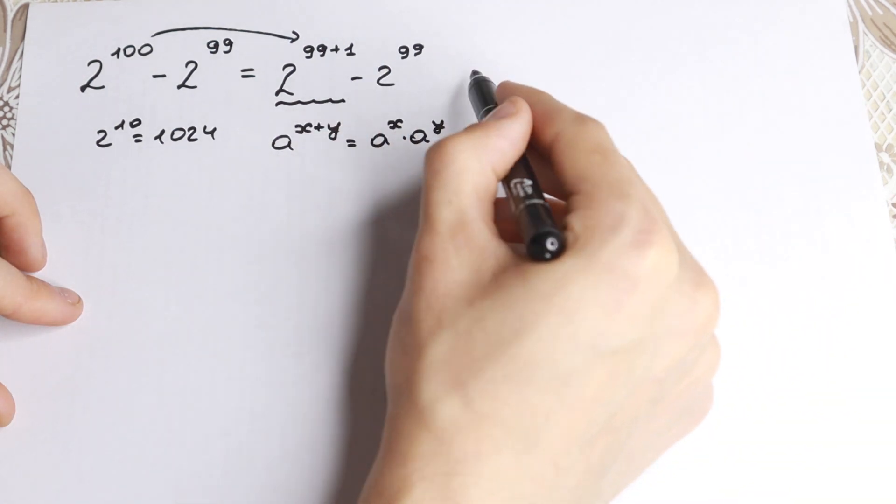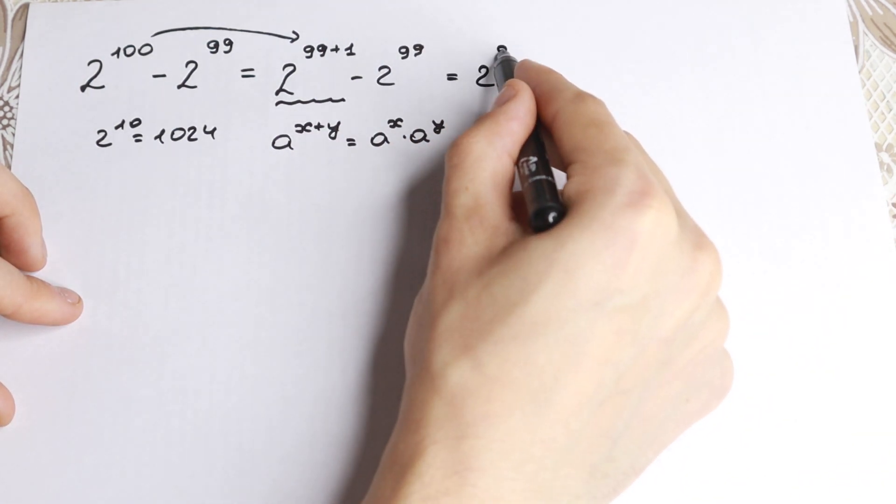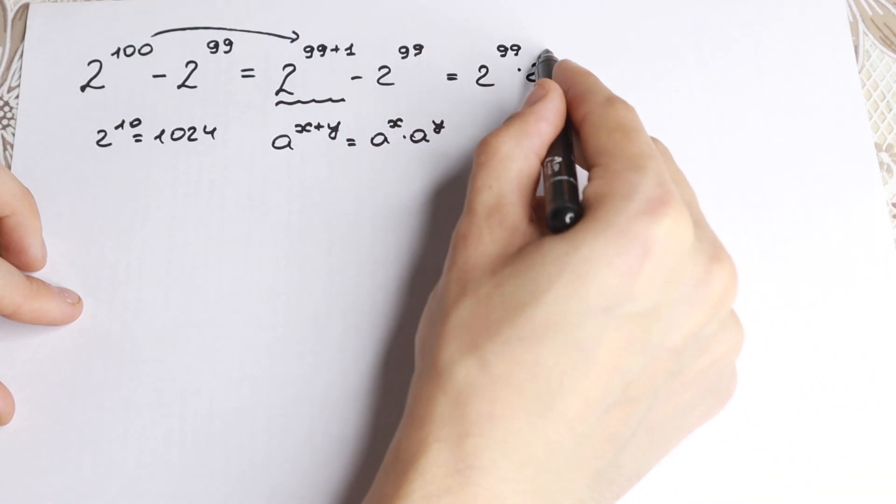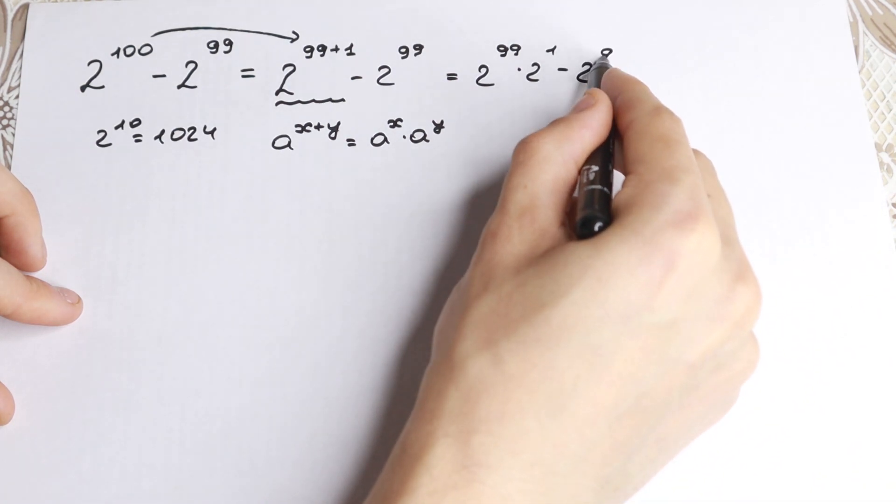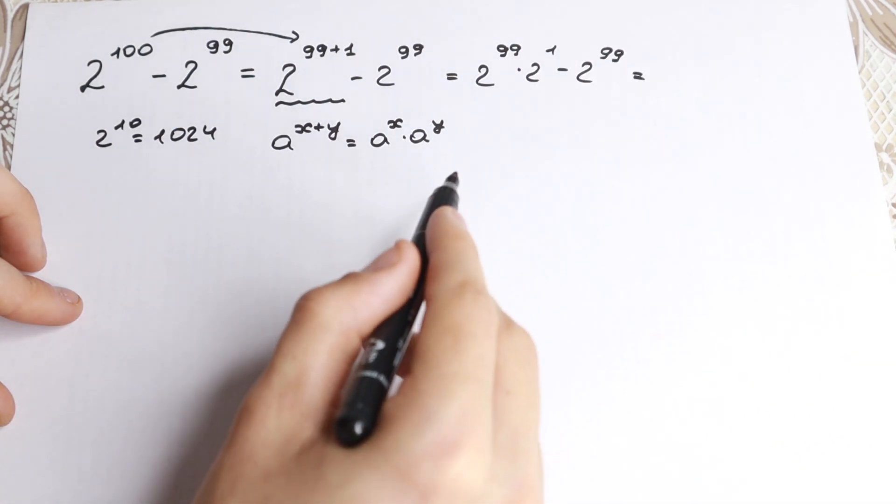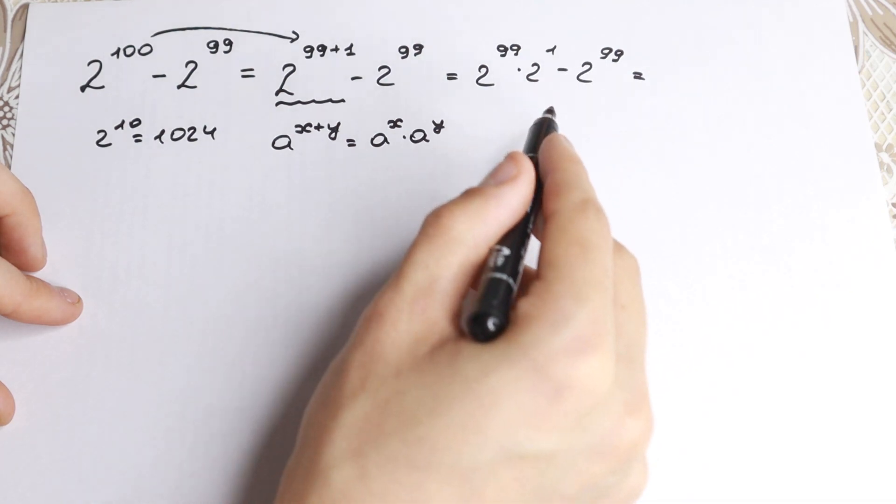Take a look, this situation we can write it as 2 to the power 99 times 2 to the first power minus 2 to the power 99. We have this situation. 2 to the power 1, this is 2, real good.